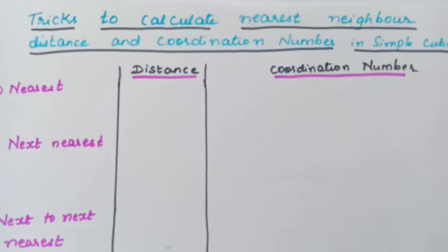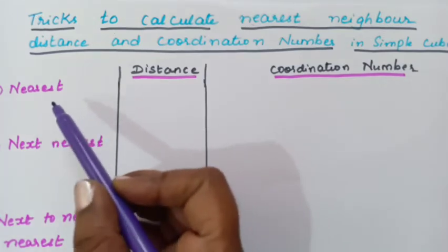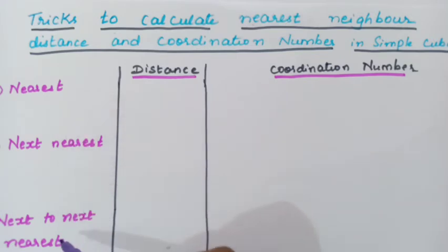So here you can see there are three types of atoms: one is nearest atom, next nearest atom, and next to next nearest atom.